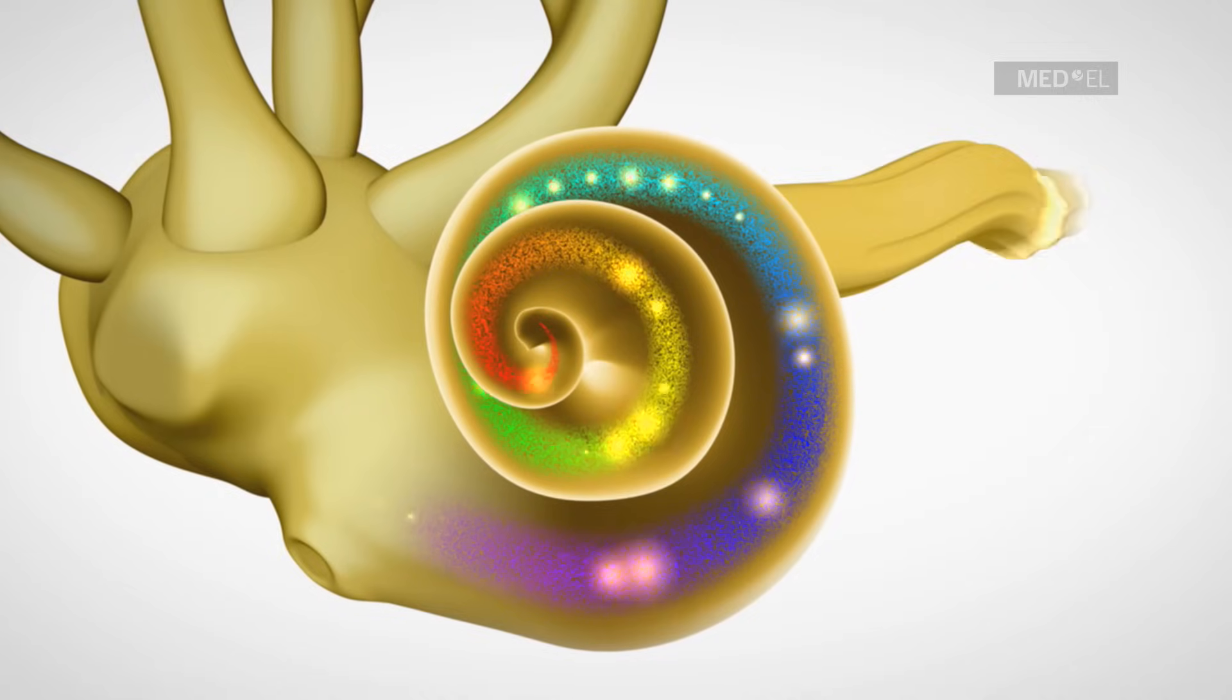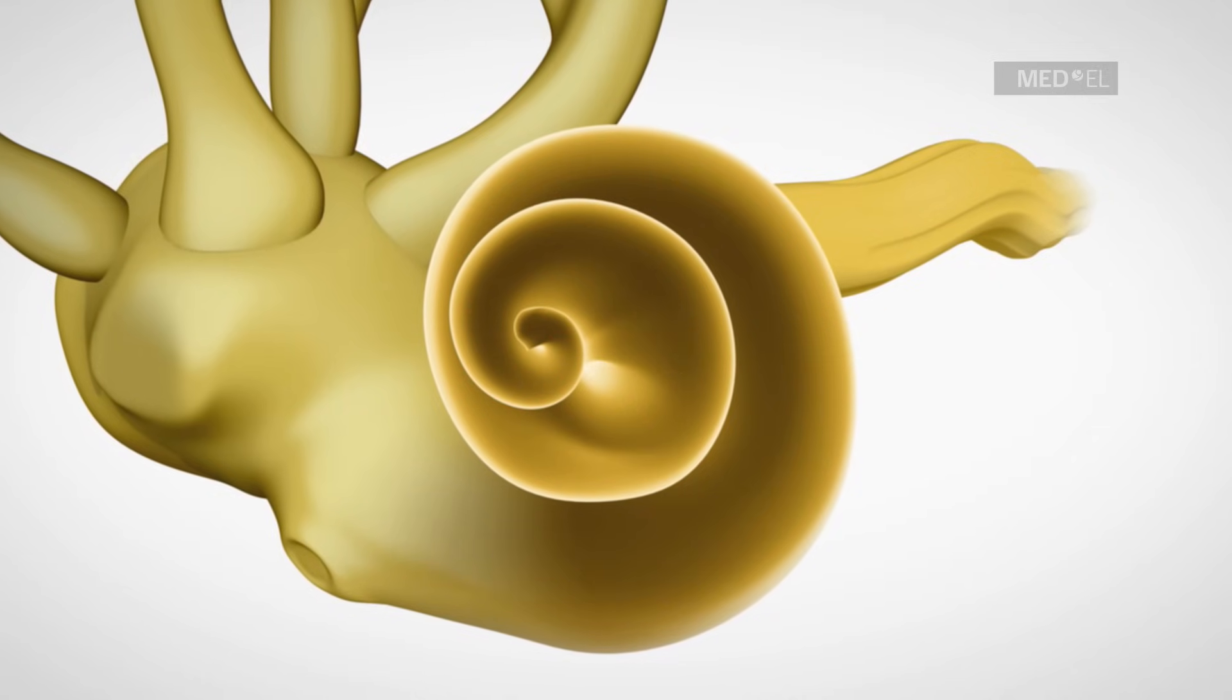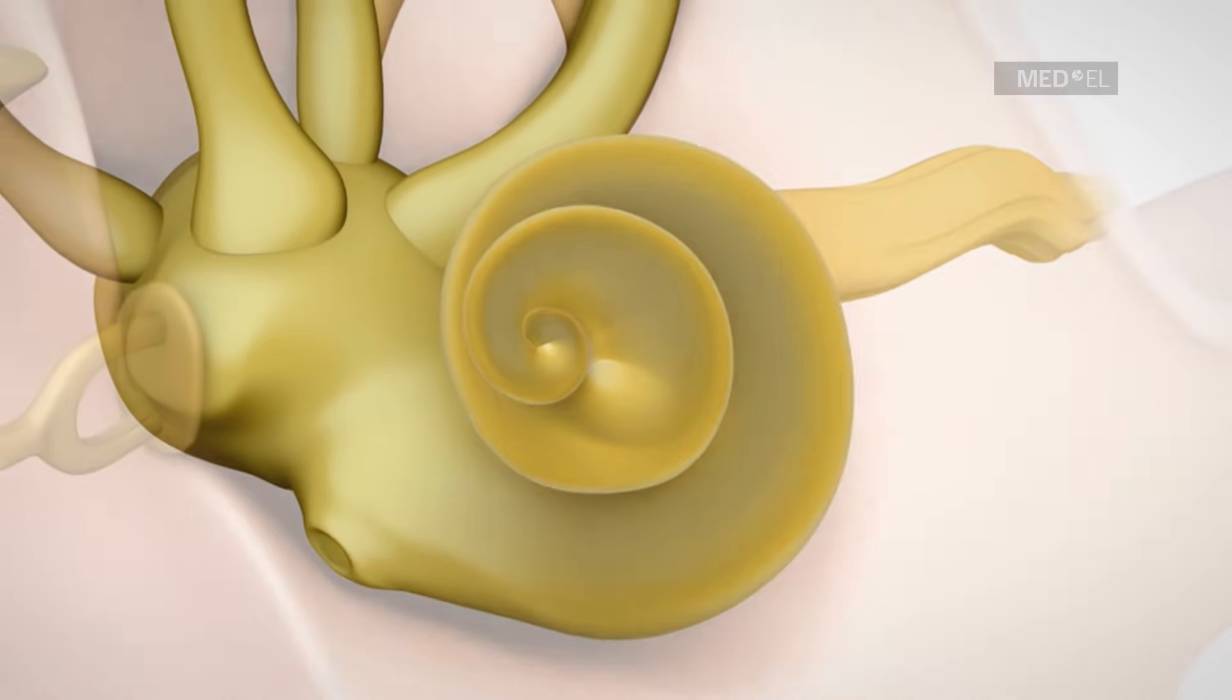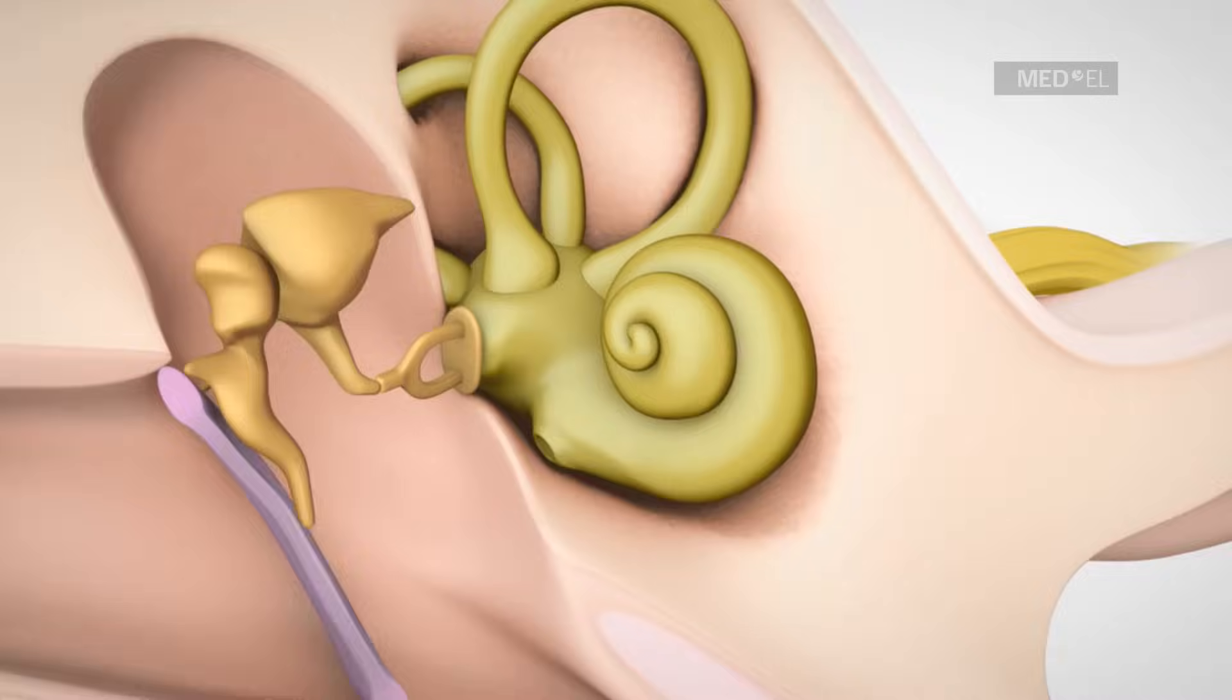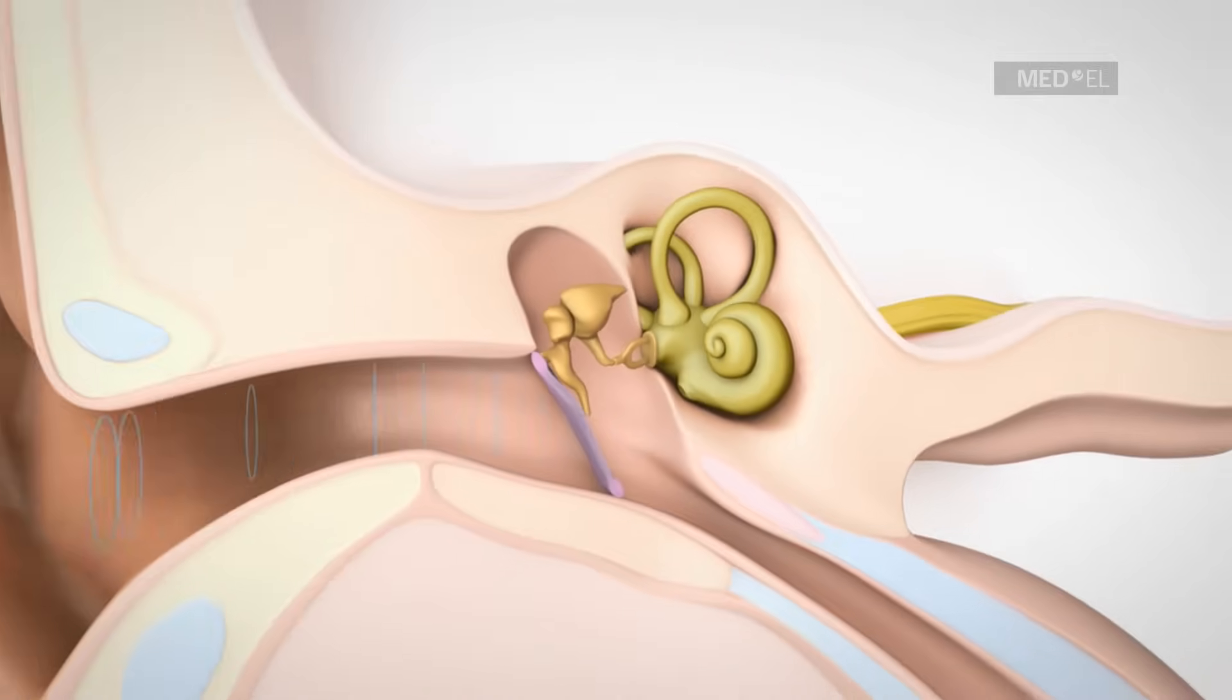When the hair cells of the cochlea are completely absent or damaged, the person suffers from a severe to profound hearing loss. For many individuals with this condition, a cochlear implant may be the best solution.